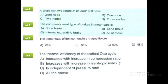A shaft with two rotors at its ends will have one node. The commonly used type of brakes in motor cars is the internal expanding brake. The thermal efficiency of the theoretical Otto cycle increases with an increase in compression ratio and with an increase in the isentropic index.